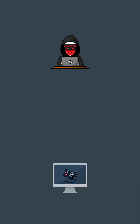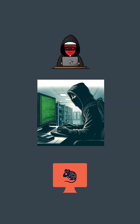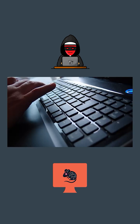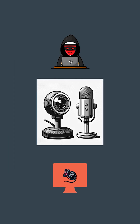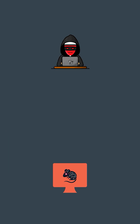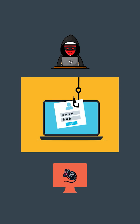A remote access trojan, or RAT, is a type of malicious software that allows an attacker to gain unauthorized access and control over a computer from a remote location. Once activated, the RAT creates a back door for the attacker, enabling them to monitor your activities, steal sensitive information, capture keystrokes, take screenshots, and even control your webcam or microphone. RATs are often spread through phishing emails.